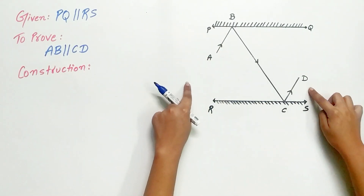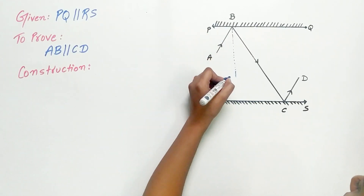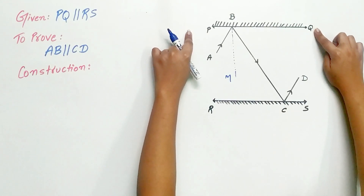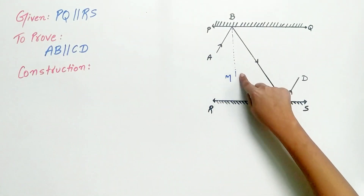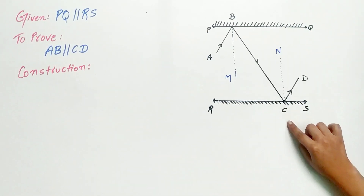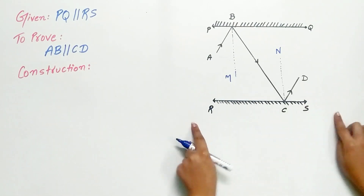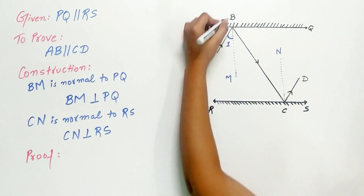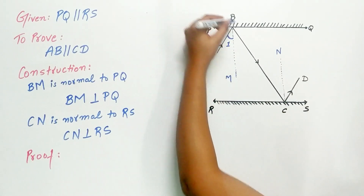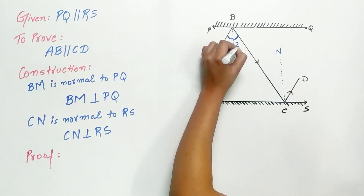To prove AB is parallel to CD, we will draw a line BM, which is normal to PQ. That means BM makes an angle of 90 degrees with PQ. Similarly, CN is a line that makes an angle of 90 degrees with RS. Angle ABM is the angle of incidence — let it be marked as angle 1. Angle MBC is the angle of reflection — let it be marked as angle 2.